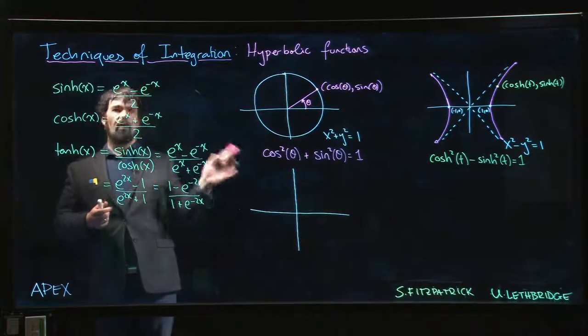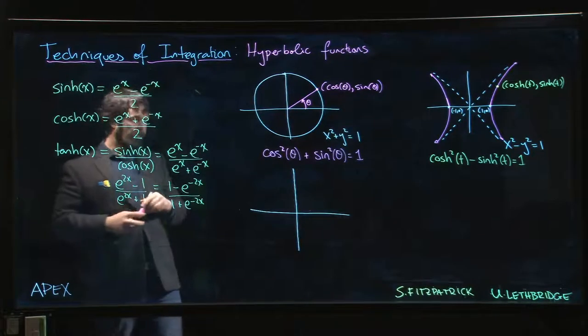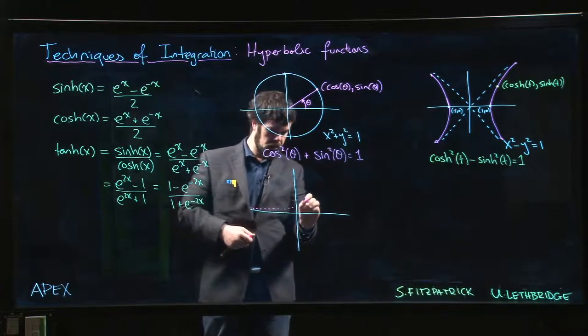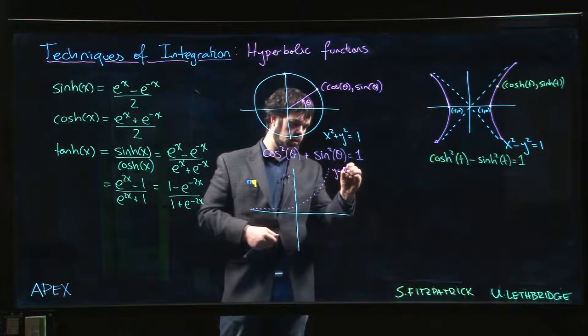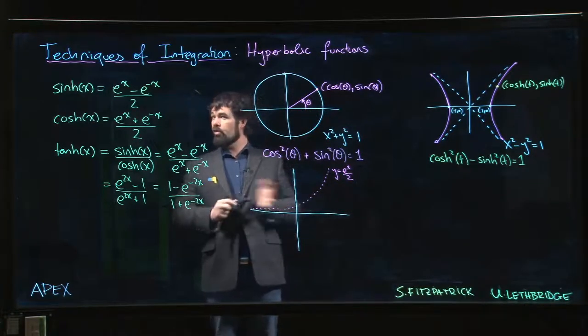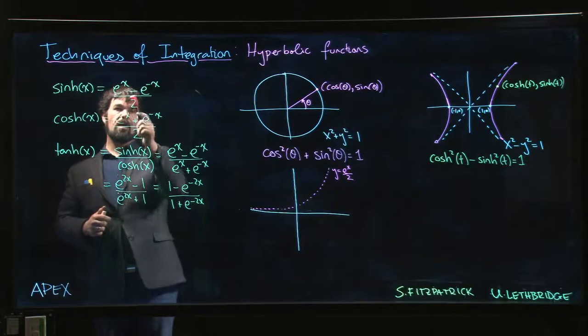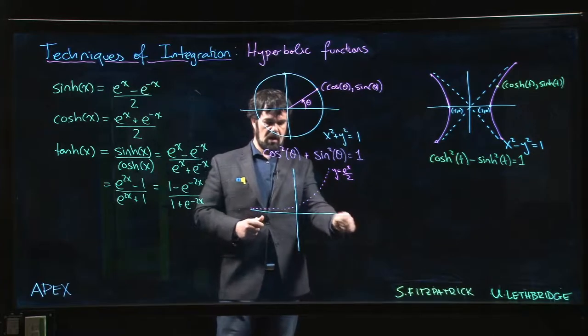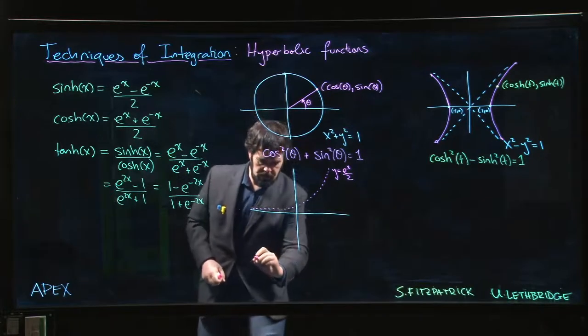Well, one of the things we can do is realize that for large positive values of x, this is going to be a tiny number and this is going to be a really big number. So for large positive values of x, we expect that the graph looks something like e^x/2. For large negative values of x, this will be a tiny number, this will be quite big, and that minus sign out front is going to flip it. So e^(-x) goes like this, but because we're taking the negative of it, we flip it, so what we get is something that looks like this.